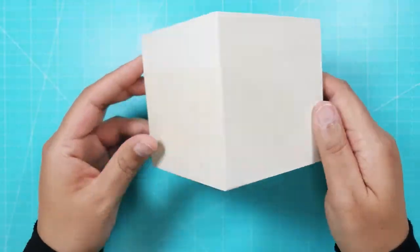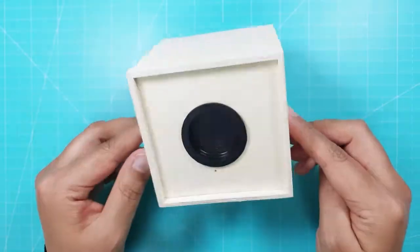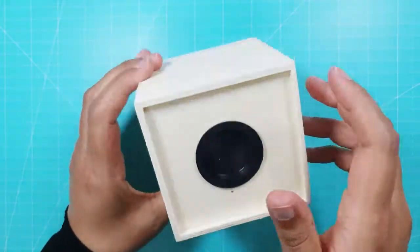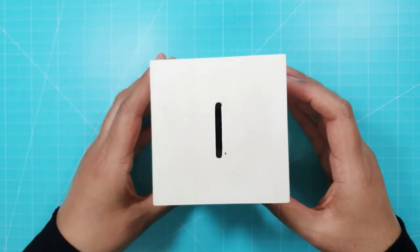I started with a wooden cube money box which I bought from a craft shop. If you can't find one of these you could use a cube shape tissue box or a cube shaped gift box instead.